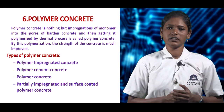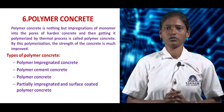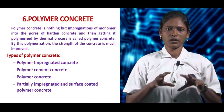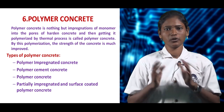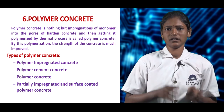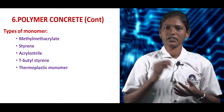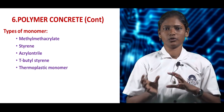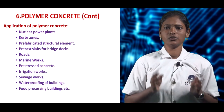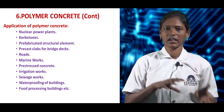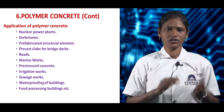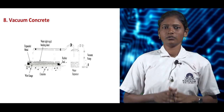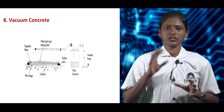Polymer concrete is the impregnation of a monomer into the pores of hardened concrete, which is then polymerized by thermal or other chemical processes, known as polymerization. Types include: polymer impregnated concrete, polymer cement concrete, polymer concrete, and partially impregnated and surface coated polymer concrete. Monomers used include methyl methacrylate, styrene, acrylonitrile, t-butyl styrene, and thermoplastic monomers. Applications include nuclear power plants, curb stones, prefabricated structural elements, precast deck slabs, road works, marine works, pre-stressed concrete, irrigation works, sewage works, waterproofing of buildings, and food processing buildings.